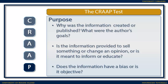The P refers to the purpose of the information. Why was the information created or published? What were the author's goals? Is the information provided meant to sell something, change an opinion, or is it intended to inform and educate? Does the information have a bias? Is it an opinion, or is it objective?